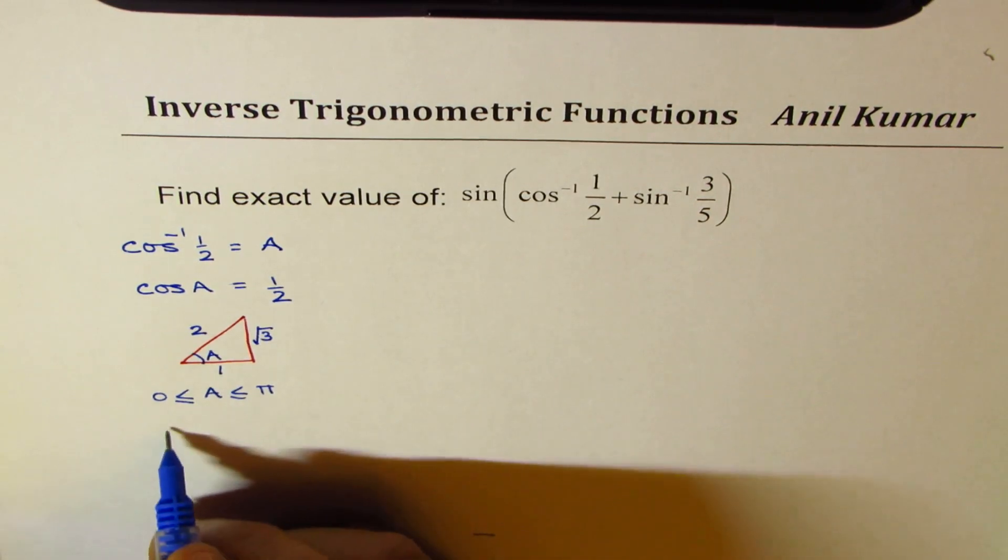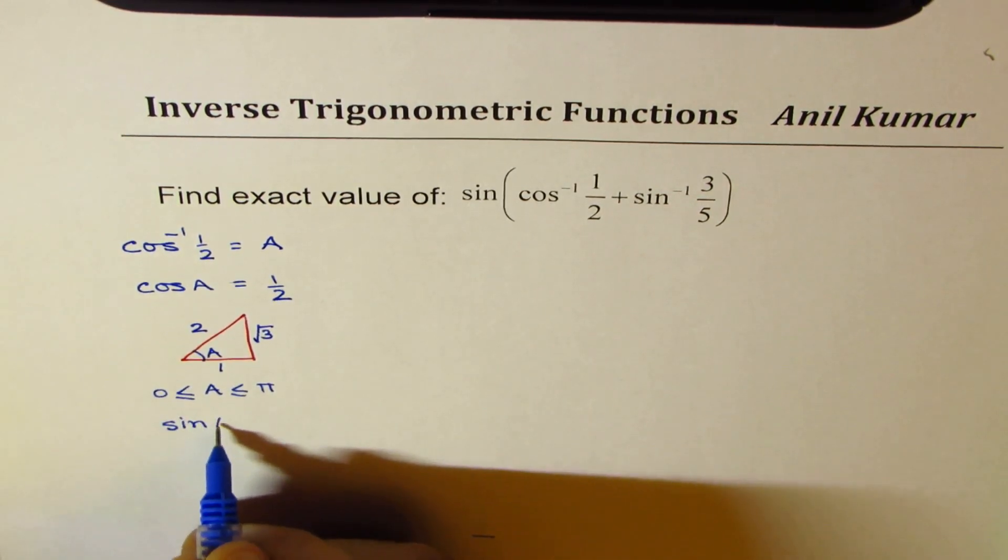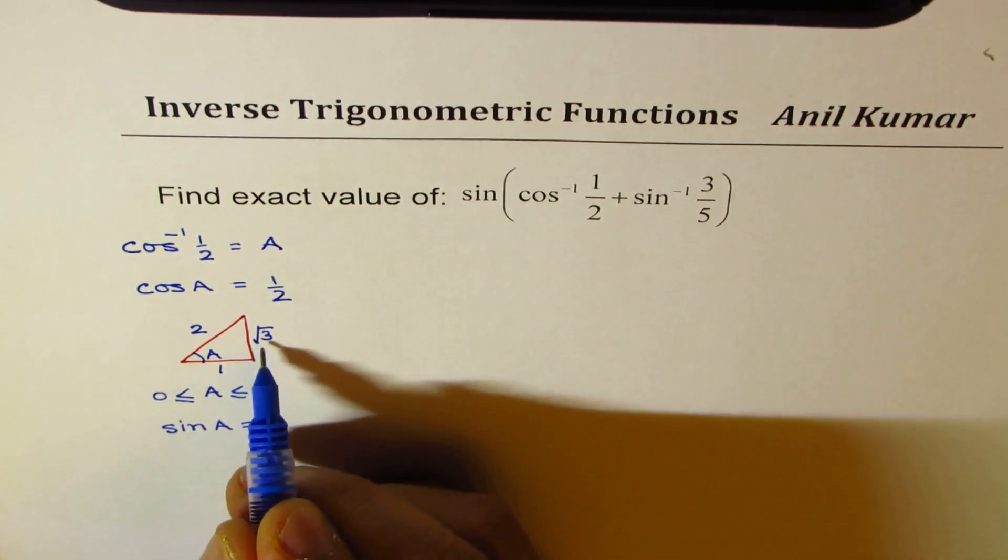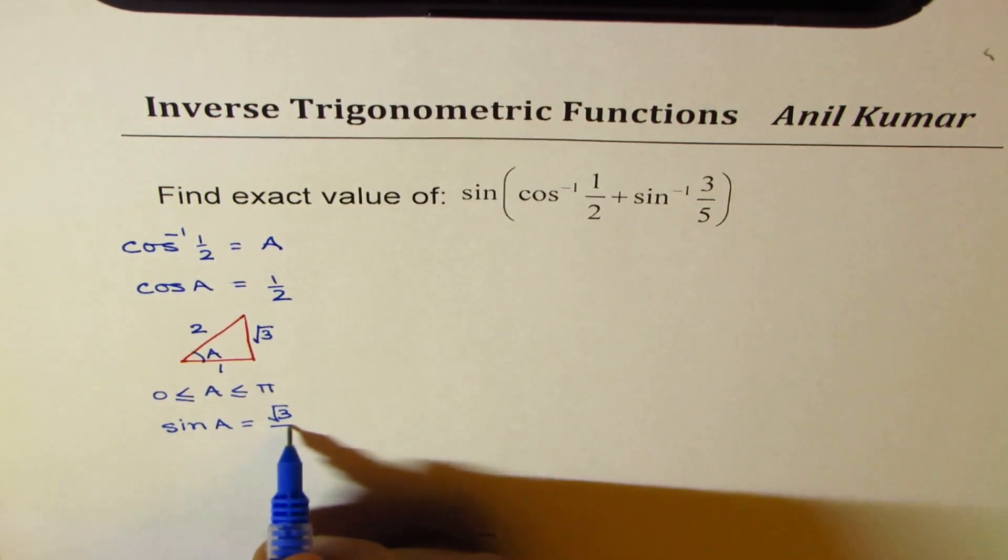Now in this situation, what is sine A? Sine A will be square root 3 over 2.